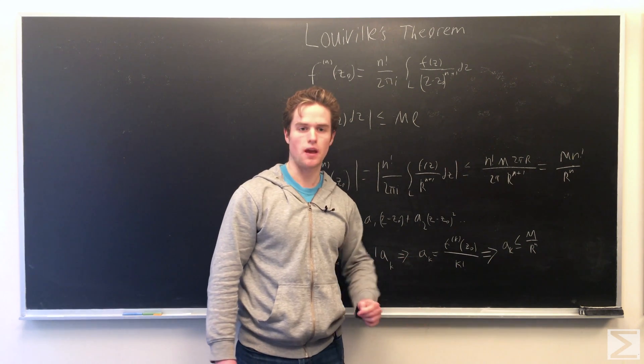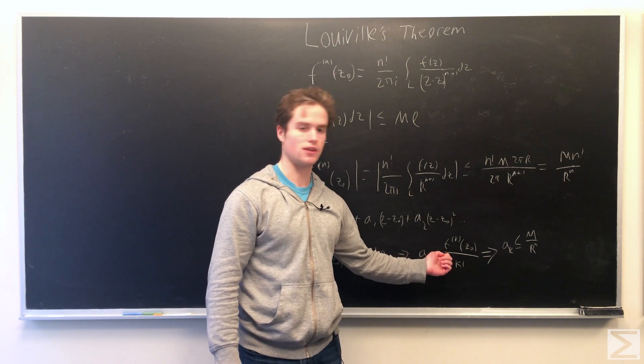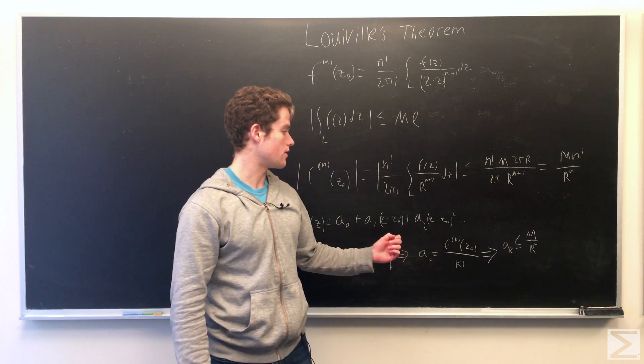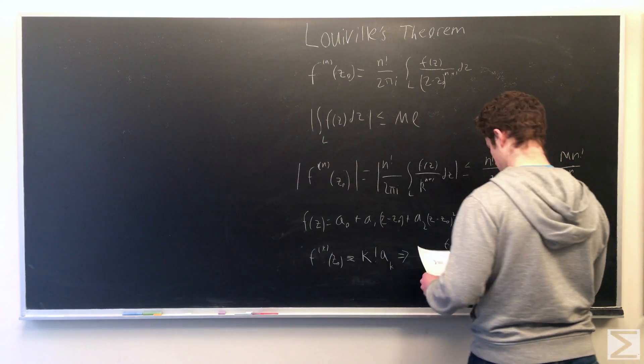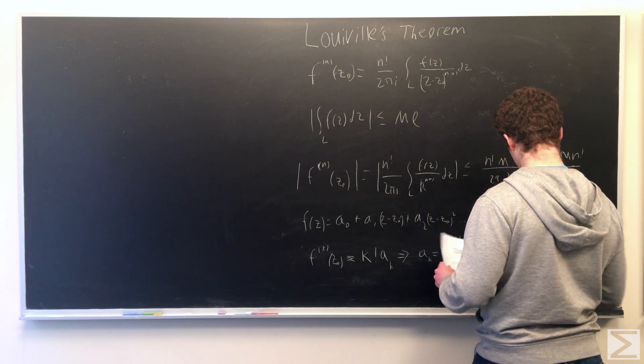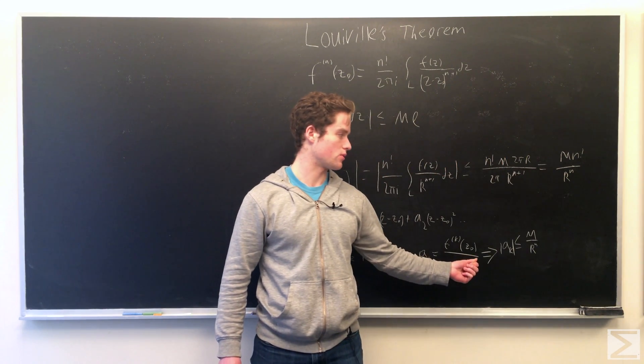So this implies aₖ equals f, the k-th derivative of f at z naught over k factorial. And using our upper bound, this implies the modulus of aₖ is less than or equal to the maximum of f(z) in our circle over r^n.